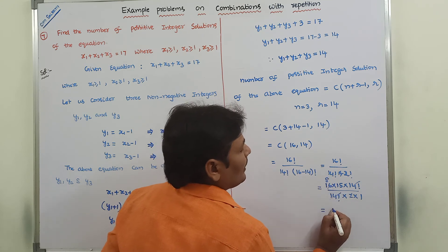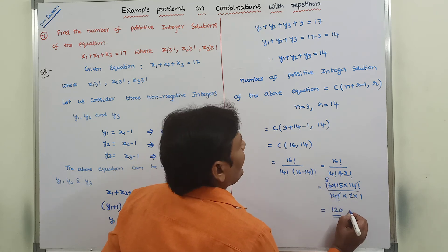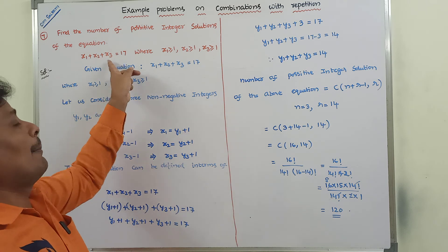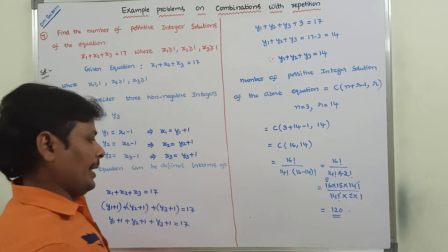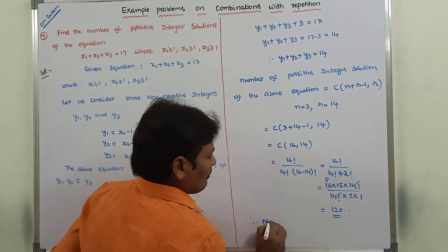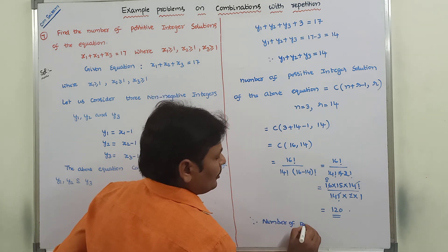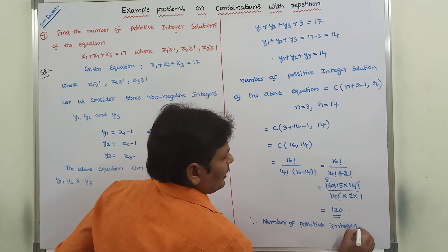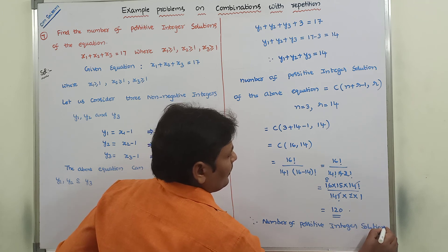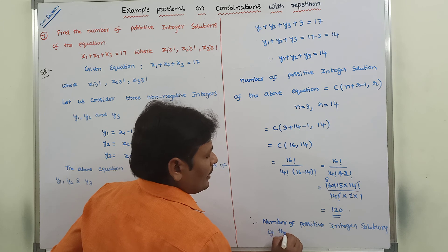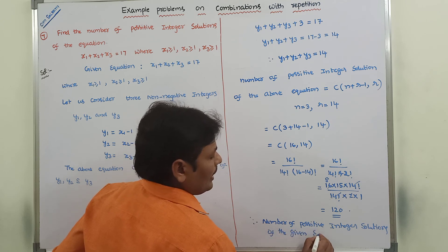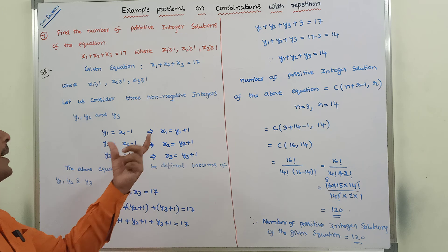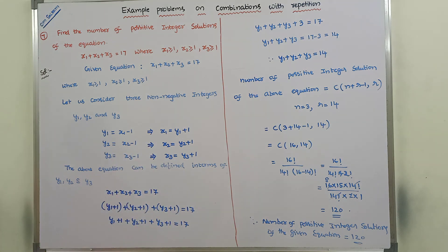So 2 goes into 16 giving 8 times, so 15 times 8, that is equal to 120. Therefore, the number of positive integer solutions of the above equation is equal to 120. The number of positive integer solutions of the given equation is equal to 120. In this way, we have to solve the given problem.